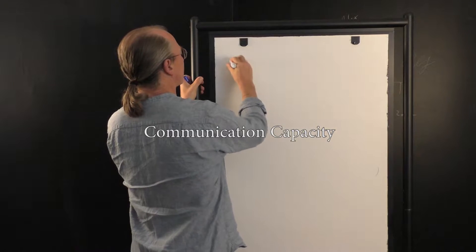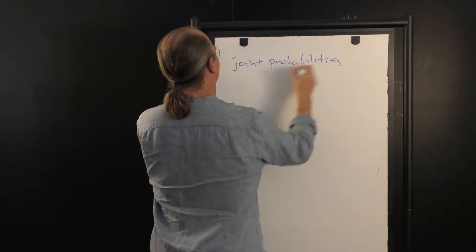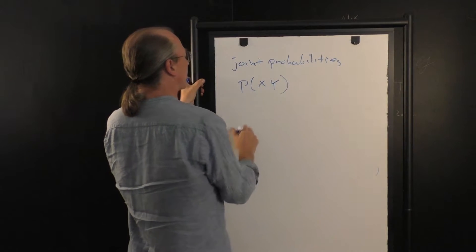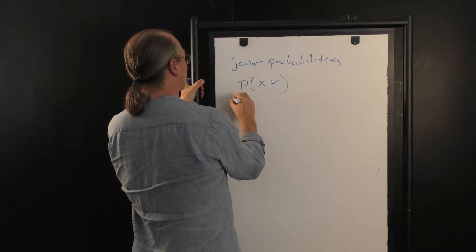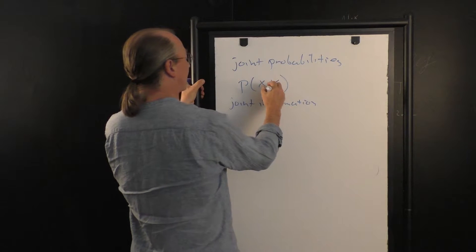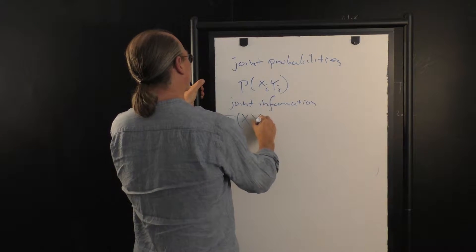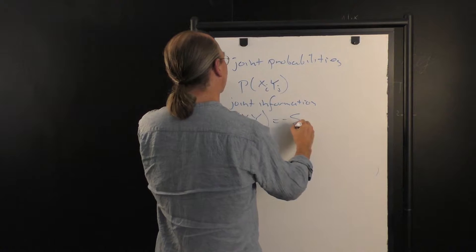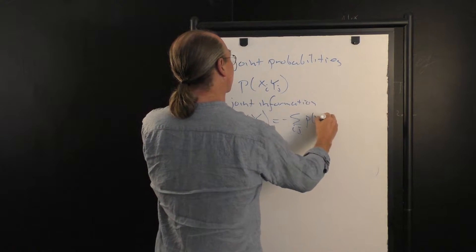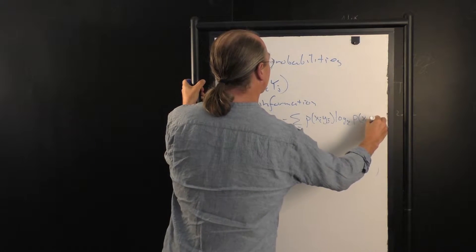Last time we talked about joint probabilities — the probability of X and Y — and we talked about joint information. If there are different labels X_i and Y_j for these different possibilities, we have the joint information with i and j, which is just the ordinary information defined over this joint quantity X and Y: negative P(X_i, Y_j) log base 2 of P(X_i, Y_j).